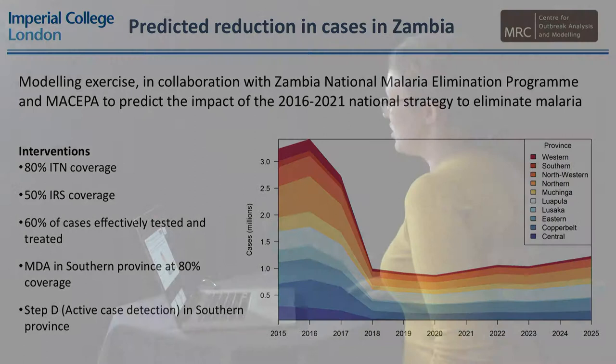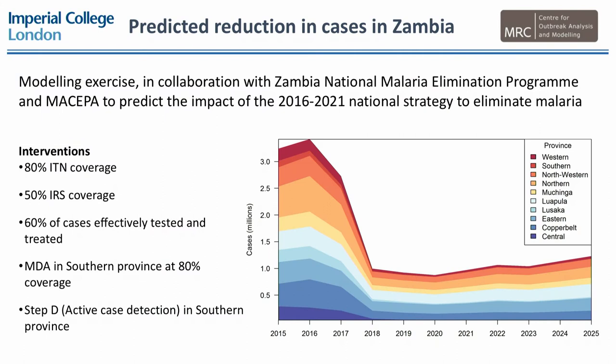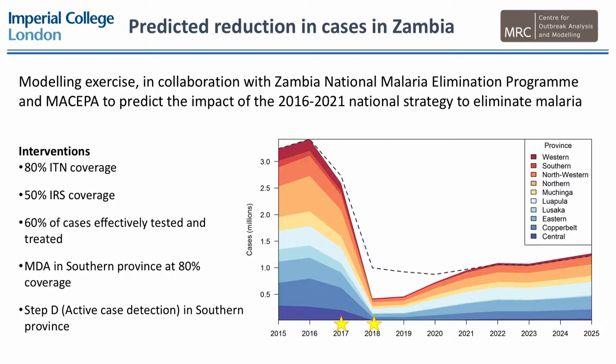One of the strategies we were interested in looking at was what would happen if we did a mass drug administration across the whole country. This is one of the benefits of modelling — we can very easily explore hypothetical scenarios. Looking at a simulation with two rounds of mass drug administration across the whole country in 2017 and 2018, we see a very sharp reduction in clinical incidence down to about half a million. However, mass drug administration is a transient intervention and does nothing to change the fundamental transmission potential of an area, so the models predict that transmission will return to the levels achieved solely through enhanced vector control and case management.